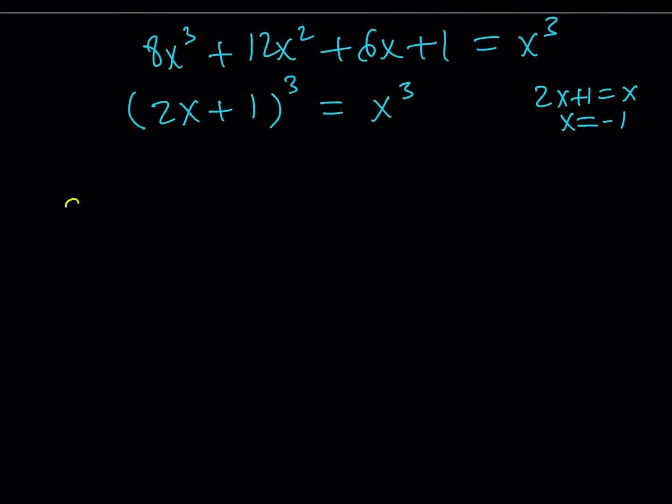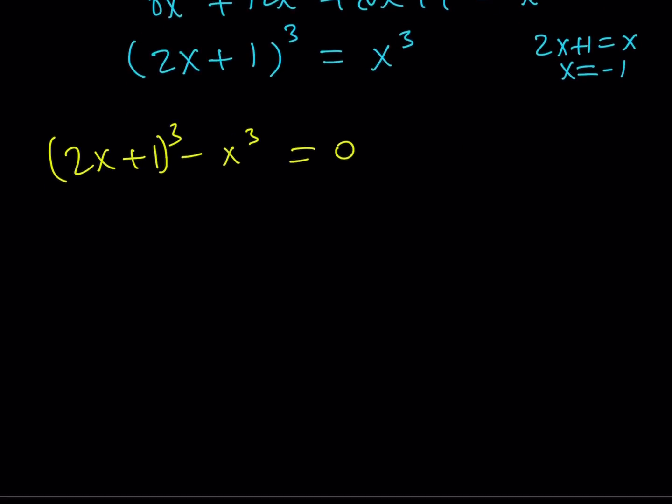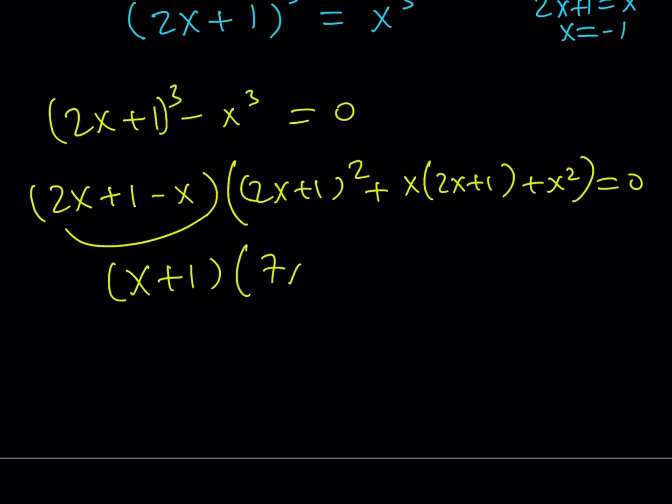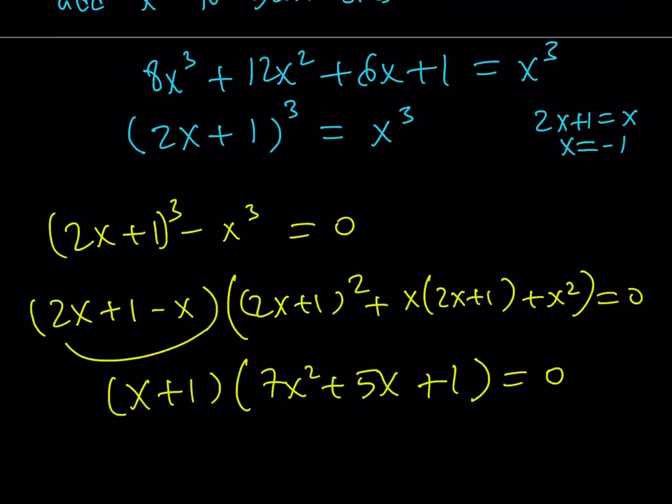All right. So, I'm going to be subtracting x cubed. And guess what? This is the difference of two cubes. Yay! I can factor it as a minus b, and then a squared plus ab, which is x times 2x plus 1, plus b squared. And set it equal to 0, and guess, you guessed it right. One of the factors is going to be x plus 1, and when you simplify the other factor, it's going to be the same thing. And this is going to give you the exact same roots as the first method. Make sense?